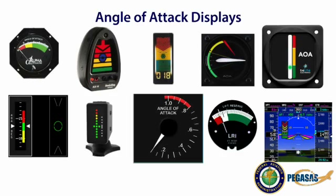Here are several examples of AOA displays. Different manufacturers will have different types of displays. How the AOA functions — i.e., the transducer or pressure system — also varies by installation and manufacturer. The main takeaway is that personal preference and aircraft compatibility are the primary considerations. It is important to familiarize yourself with a variety of angle of attack displays and select the one that suits your needs the best.